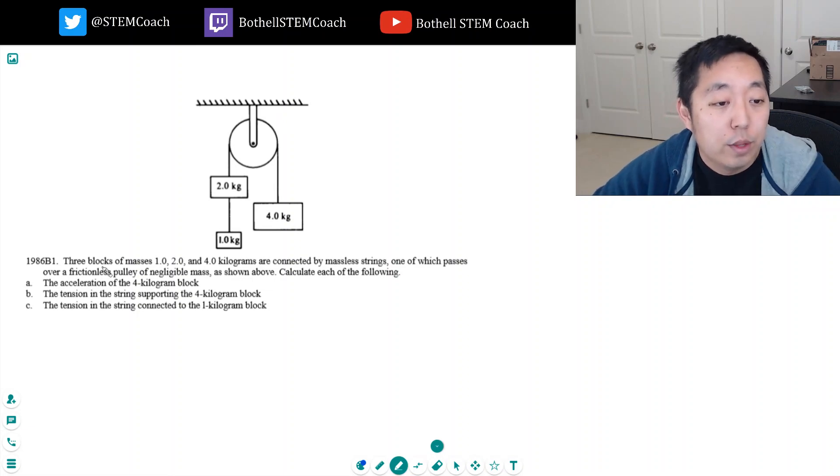So let's look at this. Three blocks of masses one kilogram, two kilogram, four kilogram, connected by massless strings which passes over a frictionless pulley of negligible mass as shown above. Calculate each of the following: the acceleration of the four kilogram block, the tension in the string supporting the four kilogram block, and the tension in the string.